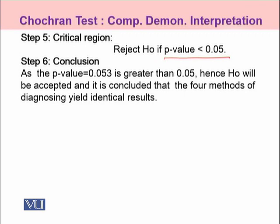In our case, alpha is 0.05. The P-Value obtained by following the procedure in SPSS comes out to be 0.053, which is greater than 0.05. In other words, it does not fall into our rejection region, so we can accept the null hypothesis H0 and conclude that the four methods of diagnosing the thyroid patients yield the same results.